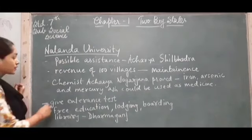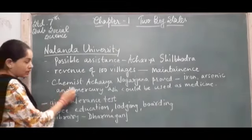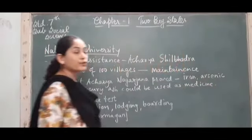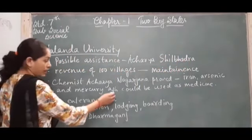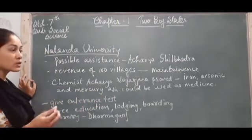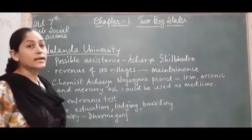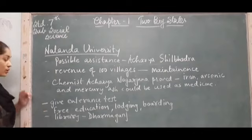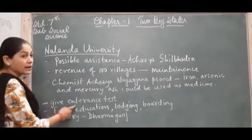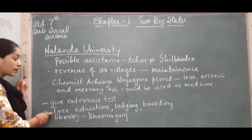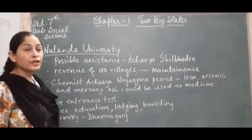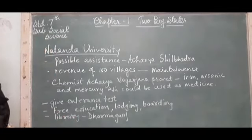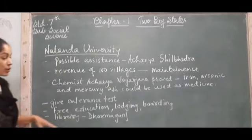At Nalanda University, there was a chemist named Acharya Nagarjuna. He worked with iron, arsenic, and mercury ash, which could be used as medicine — these had to be used very wisely. Such professors were present at Nalanda University. To take admission, students had to give a hard entrance test. After getting admission, there was free education, free lodging and boarding, with no charge at all. There was also a library in Nalanda University named Dharma Ganja.